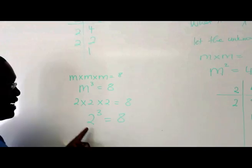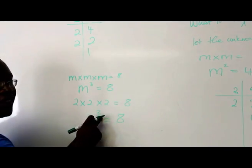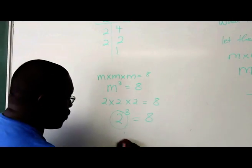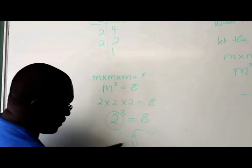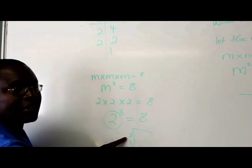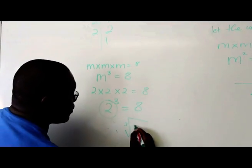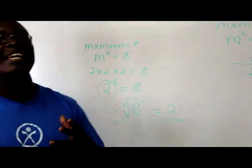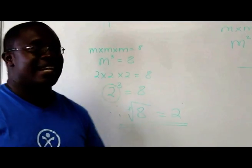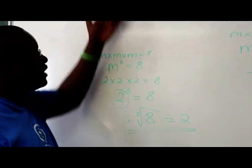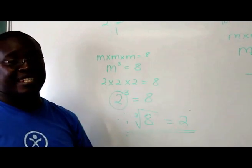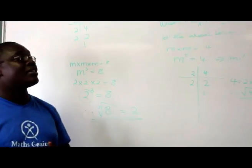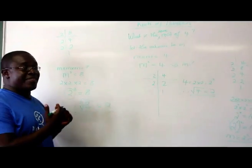Once we've done this, now we know the number that multiplies itself 3 times to get 8, which is 2. Therefore, the cube root of 8 is equal to 2. You can do this with any number that is a perfect cube. You can use the ladder method and get the answer. I hope you understand how to use the ladder methods to get the square roots and the cube roots.